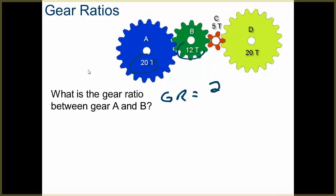I'm going to take my input gear divided by my output gear, and I'm going to get a 0.6 gear ratio.